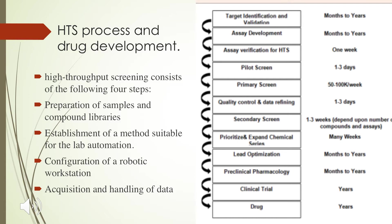Timeline for this process: target identification and validation may take months to years. Assay development also takes months to years. Verification of the assay for HTS may take one week. The pilot screen takes one to three days. The primary screen may take up to 100 weeks. Quality control and data refining may take one to three days. Secondary screening may take one to three weeks depending on the compounds to be assayed. Then we prioritize and expand the chemical series within a few weeks. Lead optimization may take months to years, followed by pre-clinical pharmacology, clinical trials, drug approval, and marketing — each taking months to years.